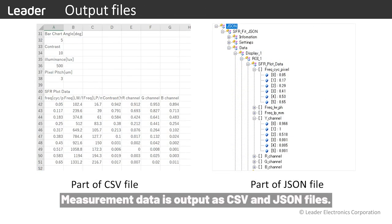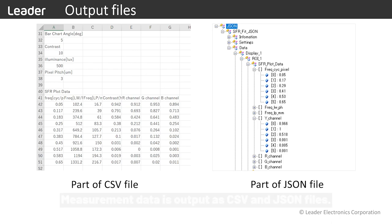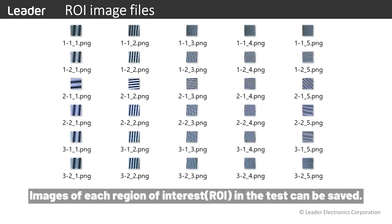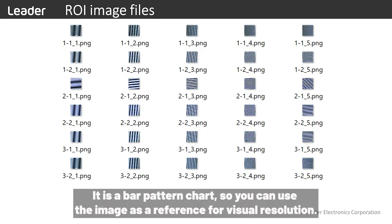Measurement data is output as CSV and JSON files. Images of each region of interest in the test can be saved — it is a bar pattern chart, so you can use the image as a reference for visual resolution.